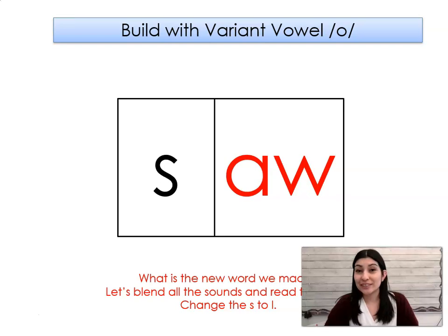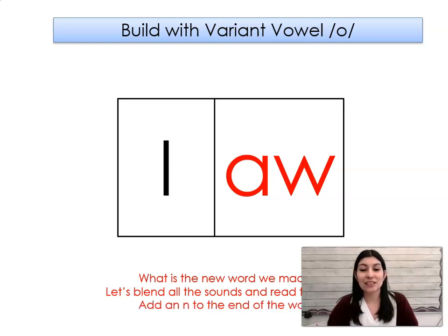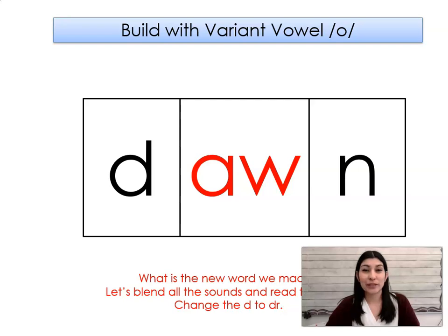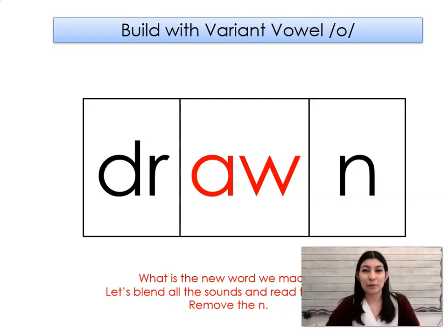Now let's go ahead and change some sounds in words to make new words. Ready? This says saw. Say it with me. Saw. Let's change this to L. What word did we make? Law. Let's add an N to the end. What word did we make? Lawn. Let's change the L to D. What word did we make? Dawn. Let's change the D to DR. What word did we make? Drawn.